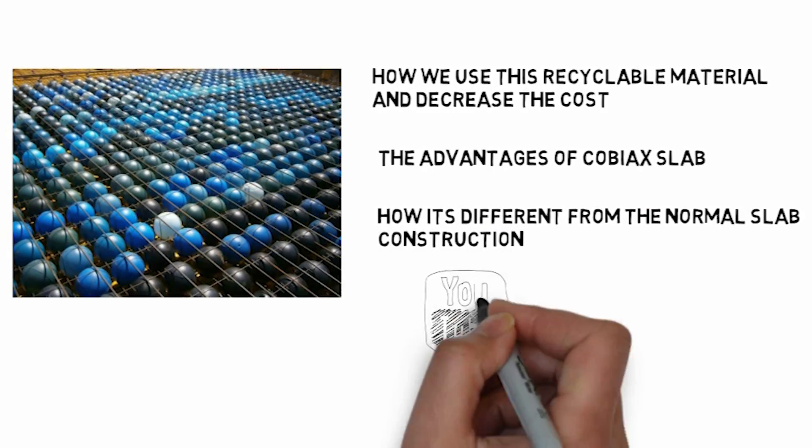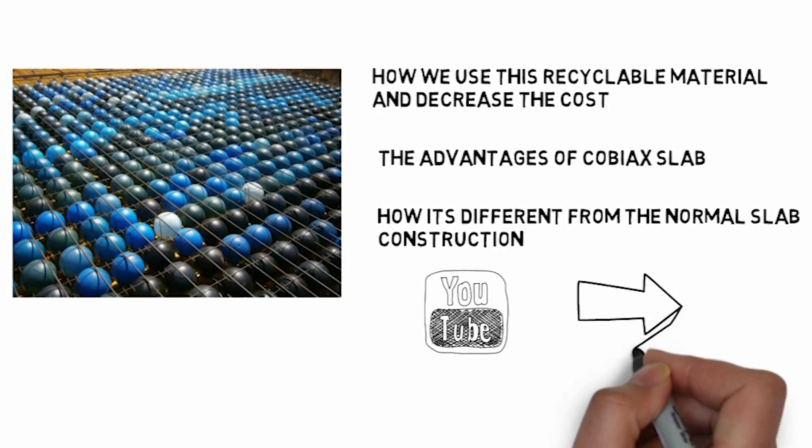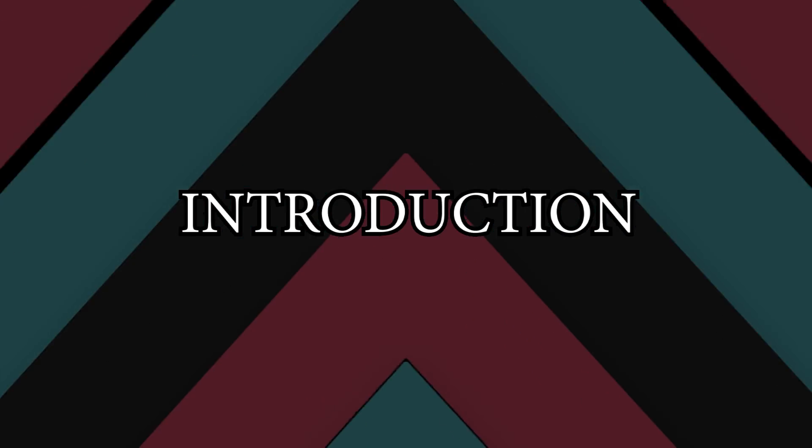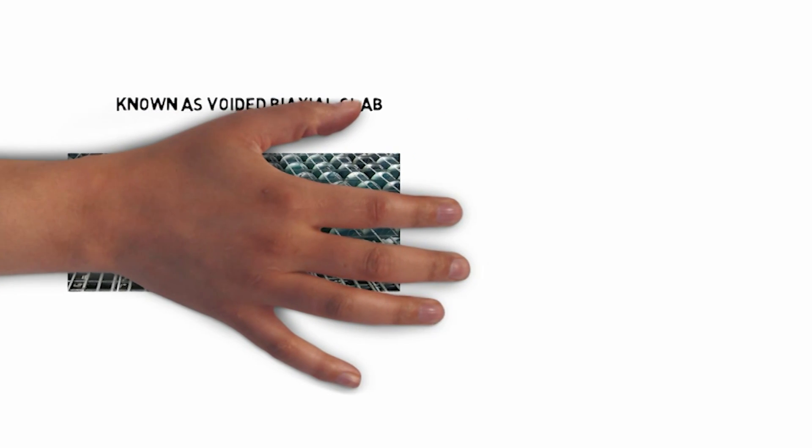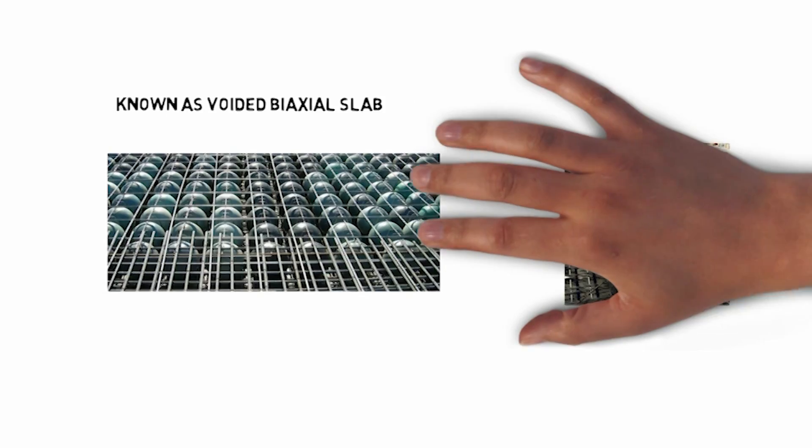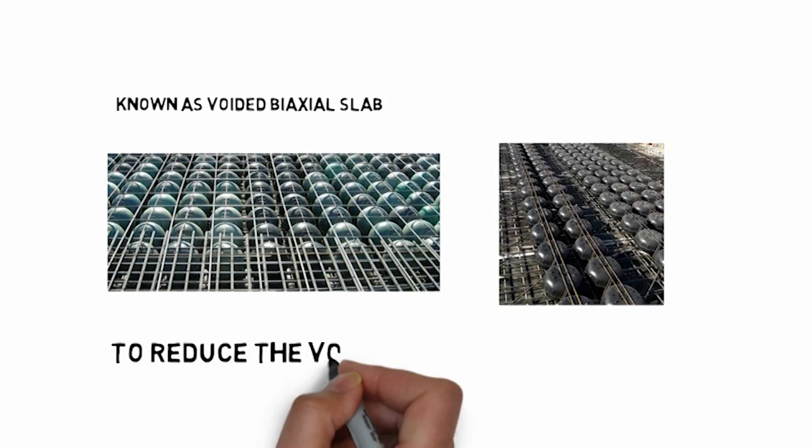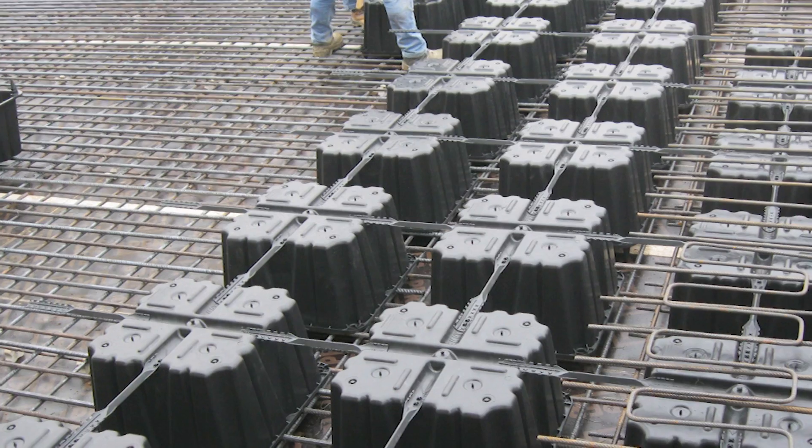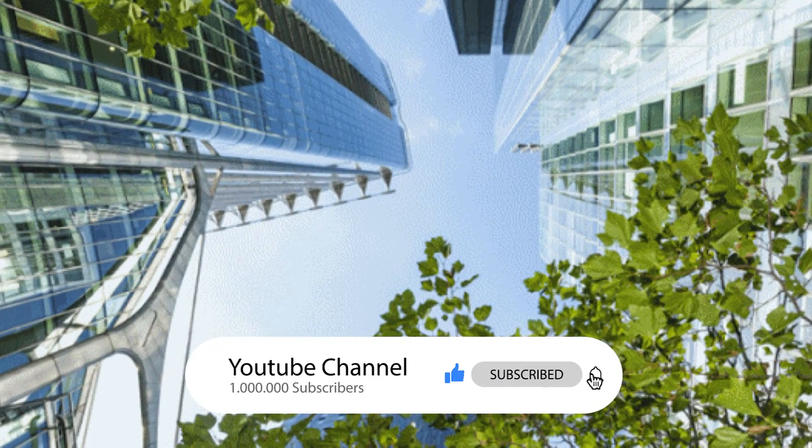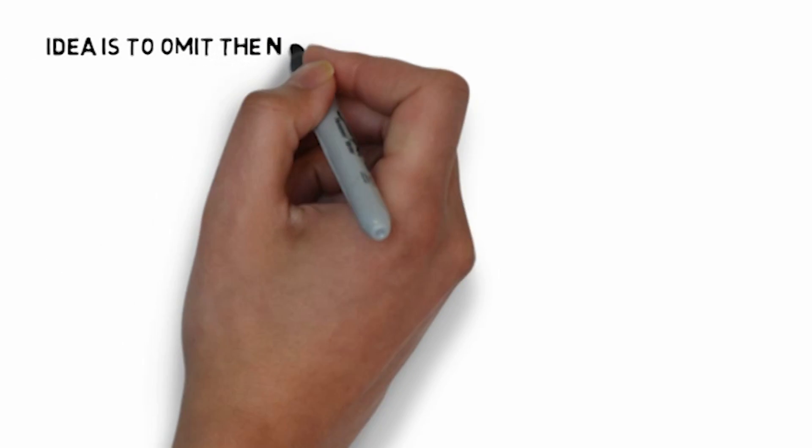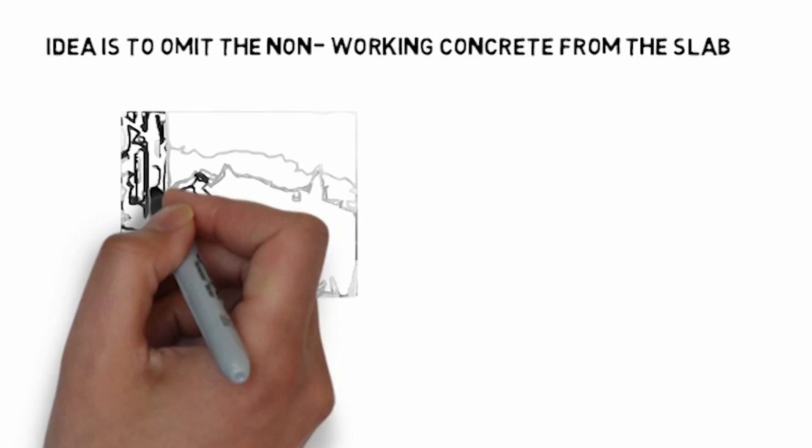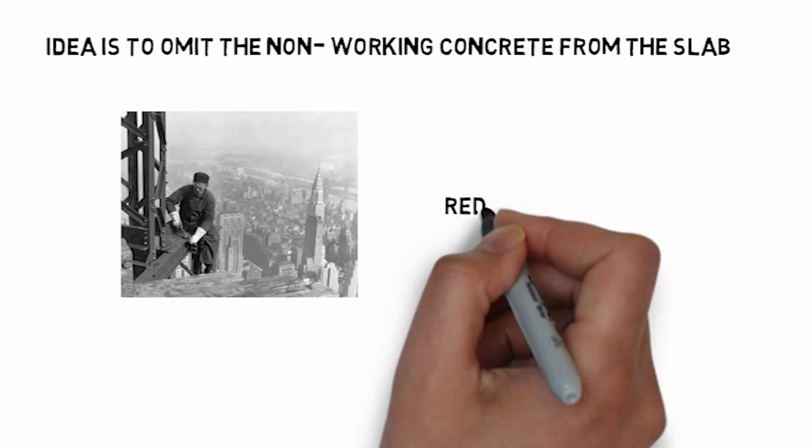Let's start from the basics. This slab is also known as voided biaxial slab which incorporates air-filled voids to reduce the volume of concrete required. These voids enable cheaper construction and less environmental impact. The idea is to omit the non-working concrete from the slab, means extra unrequired load.